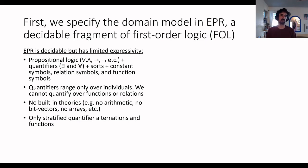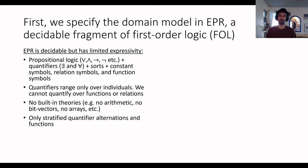EPR is nice because it's decidable, but it has limited expressivity. Like first-order logic, we can use propositional connectives — or, and, implication, not — and universal and existential quantifiers. We can declare sorts, constant symbols, relation symbols, and function symbols. Quantifiers must range over individuals, so we cannot quantify over relations or functions. There are no built-in theories: no arithmetic, no bit vectors or arrays. Moreover, for a formula to be in EPR, we can only use stratified quantifier alternations and functions.